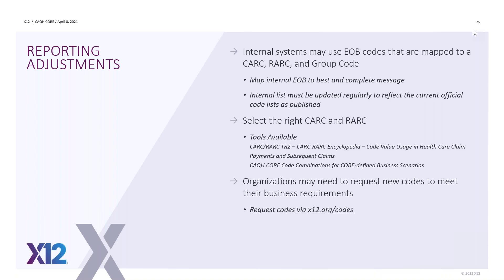You have to have a good process to update that internal list regularly — that would mean three times a year. You know that a new CARC list is coming out in March, so hopefully you can put a process together with a team that can sit back and look at new CARCs and determine if any of your EOB codes have the same kind of message. If they do, you can start reporting that new CARC as compared to maybe some other CARC that was just being used as a band-aid because it wasn't quite the right message.